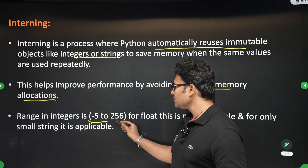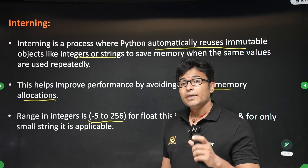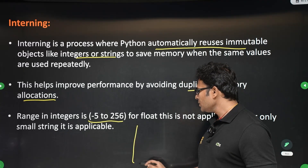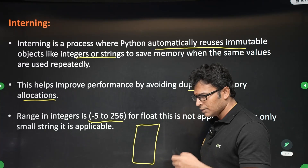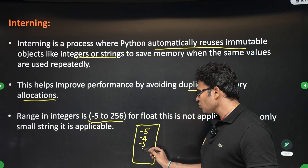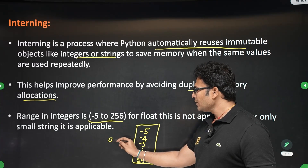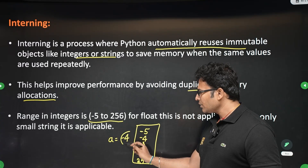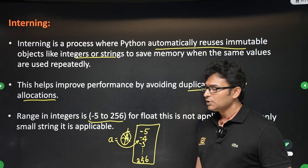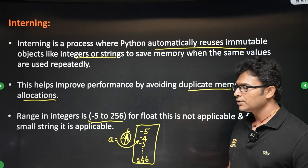For integers, Python preloads values from -5 to 256 into memory. Whenever you use any integer in that range, the existing object is reused rather than allocating a new one. So if you write a equal to -4, Python will not allocate a new space for -4; it will directly use the existing object. These values from -5 to 256 are always present in memory.